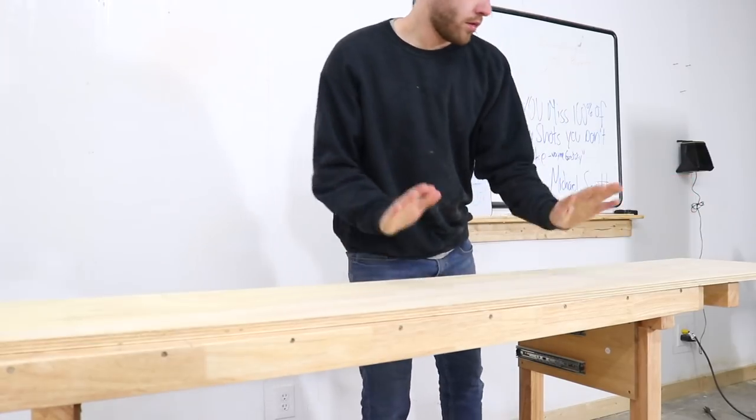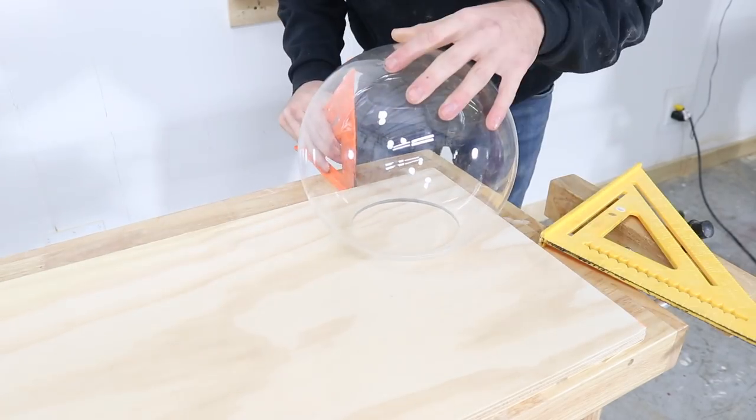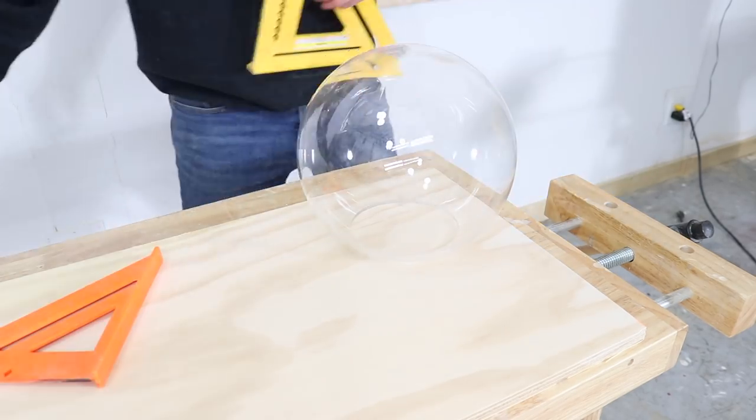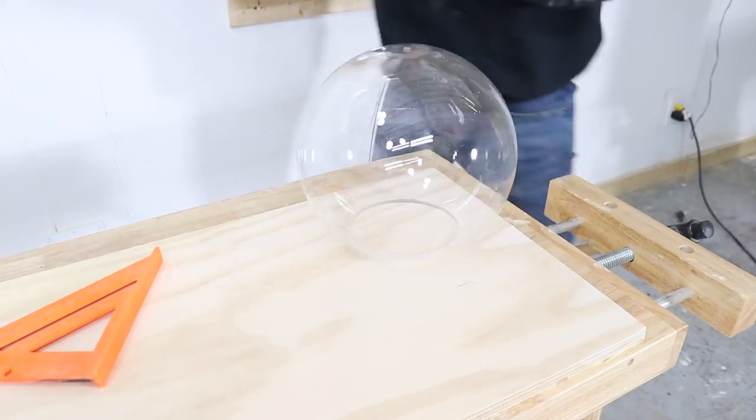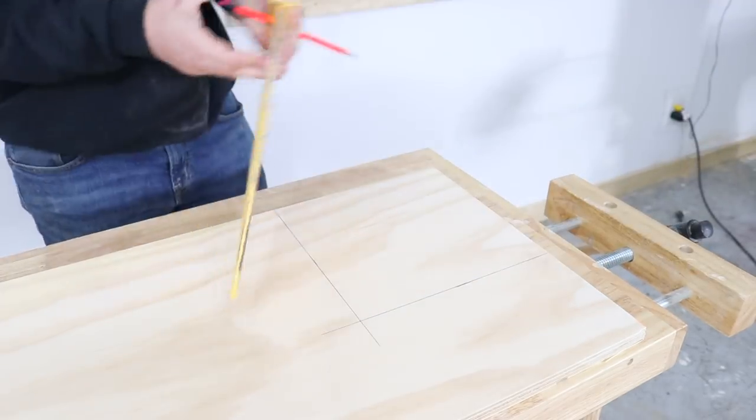The base is going to be made out of three-quarter inch pine plywood and here I'm using the clear plastic globe that I'll be using as a lampshade to figure out how big I need to cut my pieces. I want the length and the width of the final base to be the same size as the diameter of the globe.